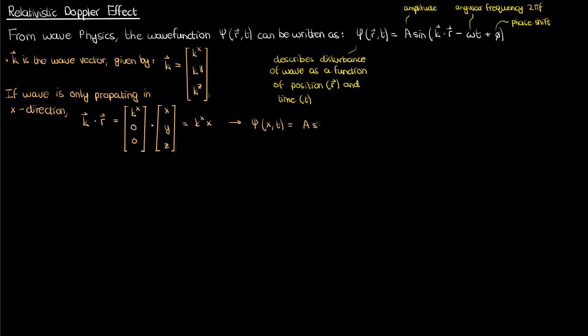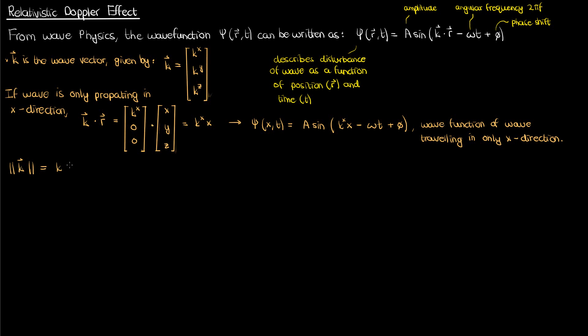If we plug this into our wave function equation, we get the familiar function representing a wave traveling in the x direction. You could still have the disturbance if you deviate from the x axis and go up or down the y or z axis, but the wave disturbance would only be traveling in and only depend on the x direction. The magnitude of the wave vector, written as a simple k without the arrow, is 2π over lambda, where lambda is the wavelength — the distance between two points on the wave at the same phase, like two peaks or two troughs.